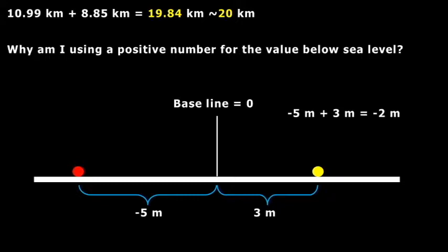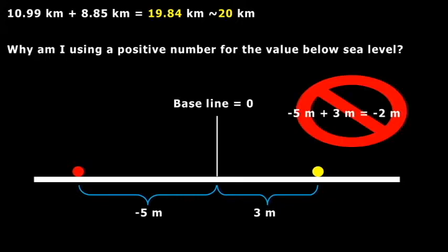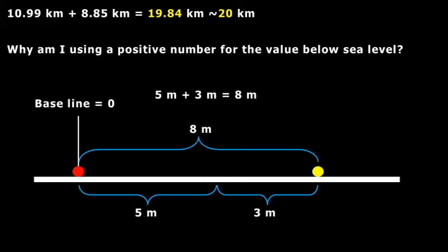So they're both positive numbers from the baseline. So minus 5 meters plus 3 meters, they're not negative 2 meters away from each other. You can't have a negative distance between two objects. That just doesn't work. So you just use the positive numbers. So you get your 8 meters in this case. You just reset your baseline, essentially, is what you're doing. So that's why I added the two numbers and didn't subtract anything.